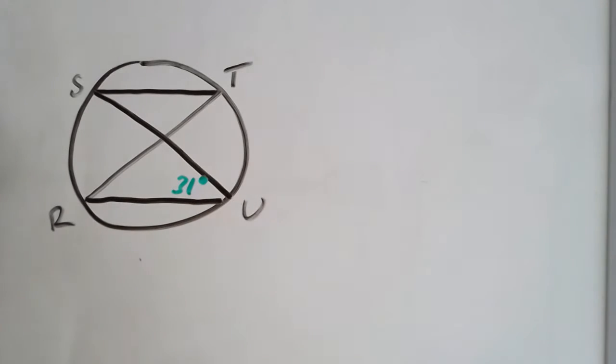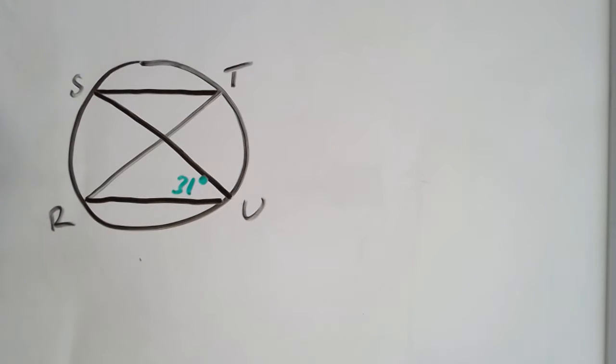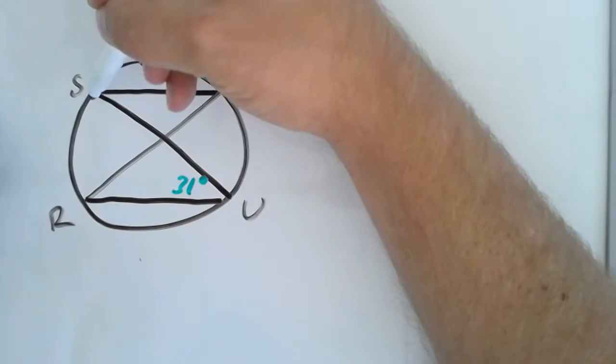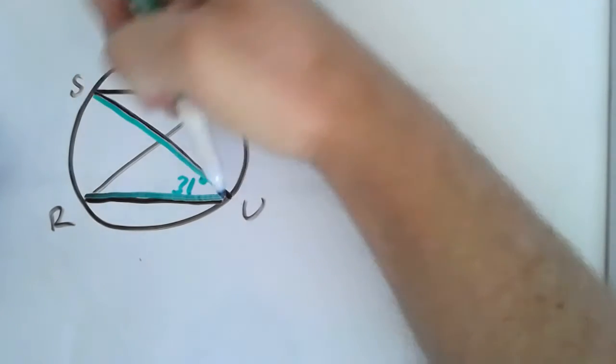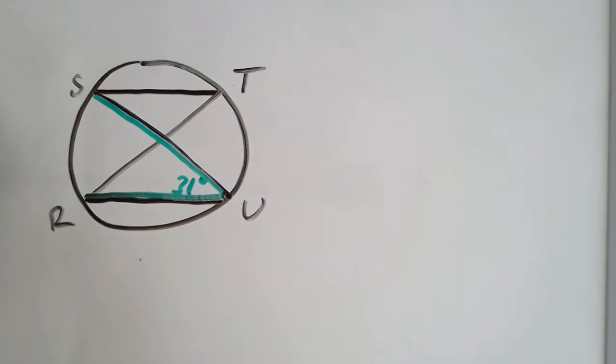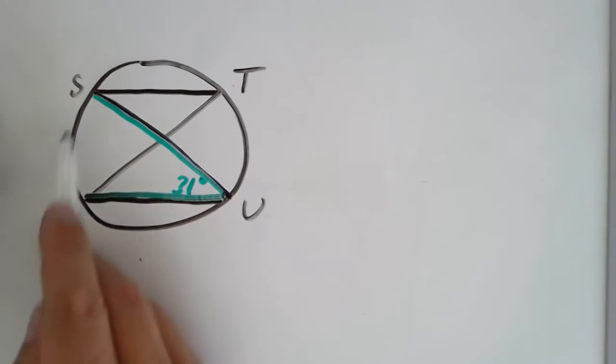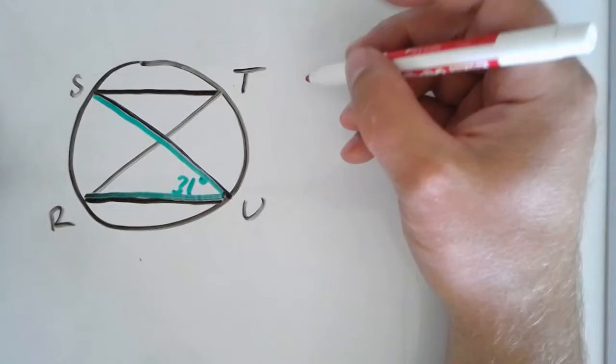Alright. So the first thing they ask me for is the measurement of arc RS over here on the left-hand side. So the first thing that you should probably notice here, especially within the section about inscribed angles, is that angle U here is an inscribed angle, and it makes the following angle. Just to kind of highlight it a bit. And so that inscribed angle does have an intercepted arc, and that intercepted arc is arc R to S right up here.